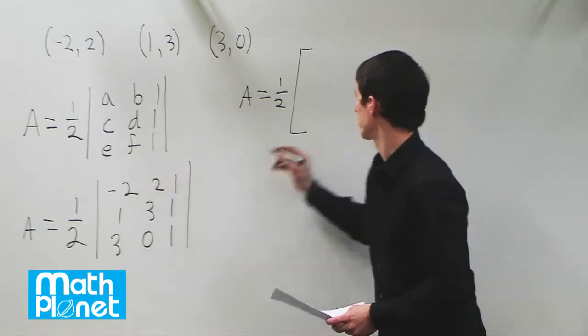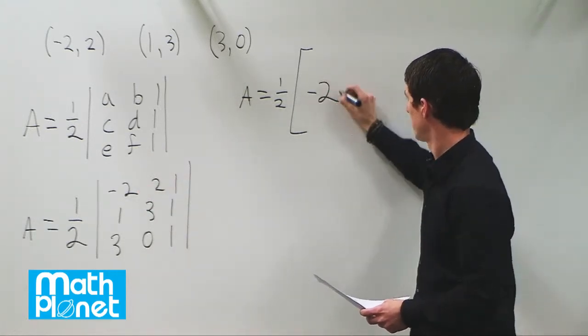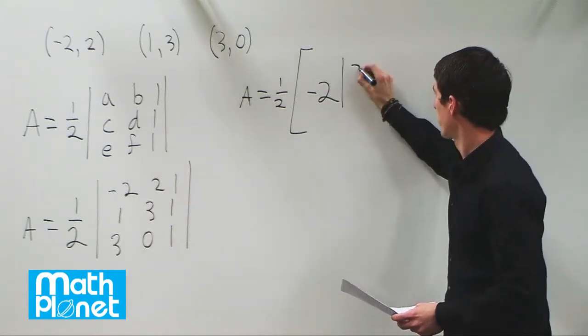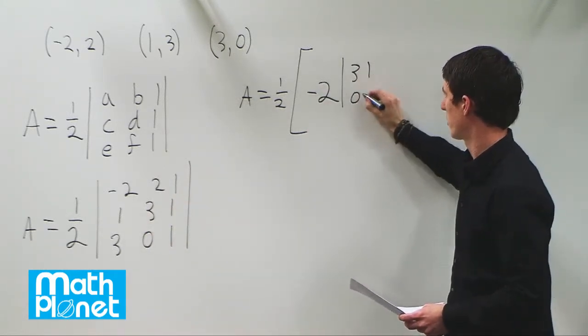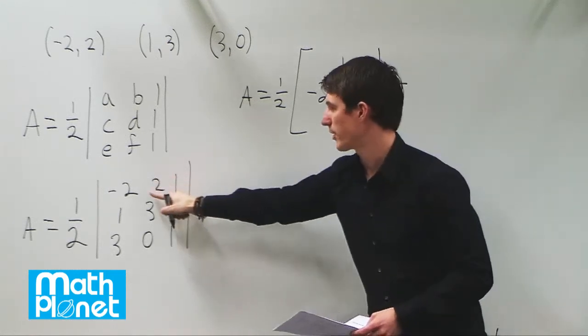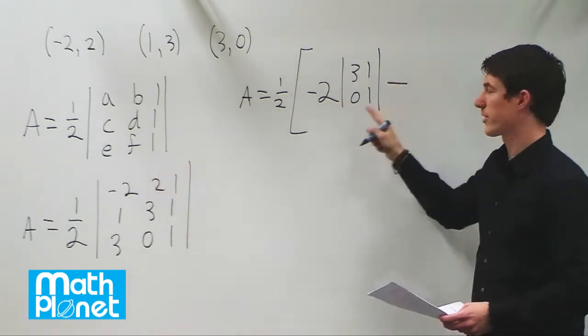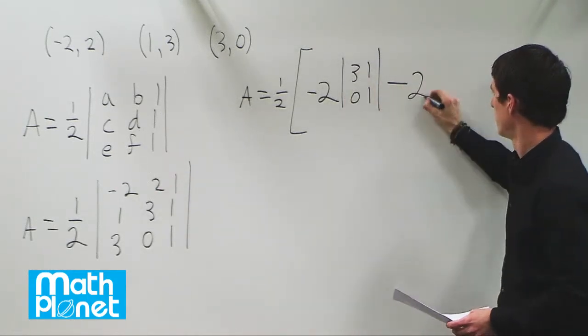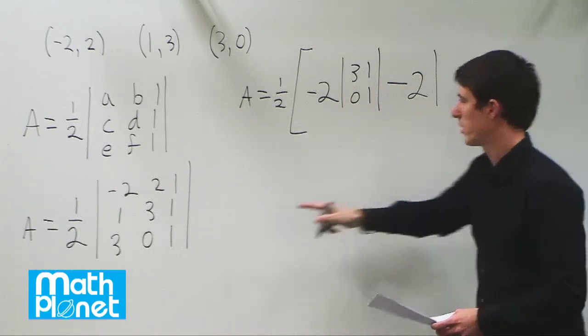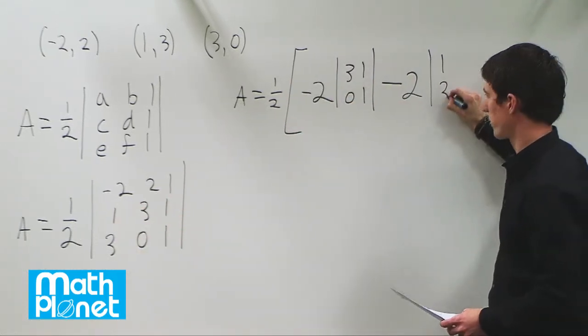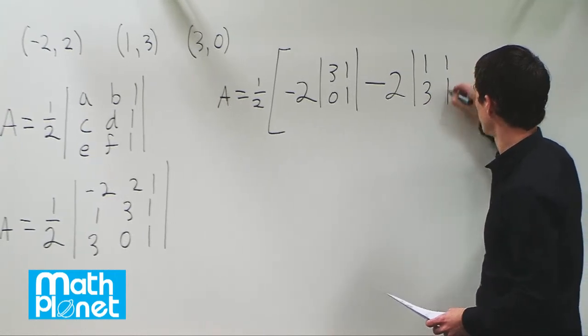So to begin with we have minus 2, determinant, and then what we have here, 3, 1, 0, 1. Minus this value, so this is a minus, the other ones are just the normal values, minus 2, minus 2, and then determinant of what we have here and here. So that's 1 and 3, and 1 and 1.